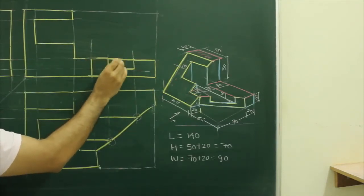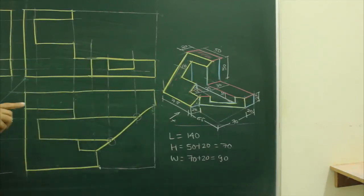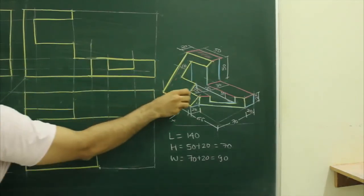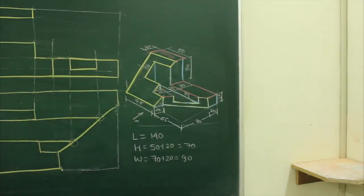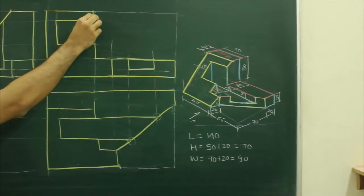Now see why this line is dark, because when you see from the front, this part is there. So that is why this line is dark. Now there is one more thing, that is, this part could be also dark.